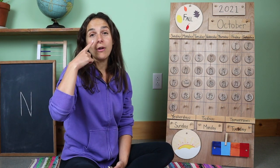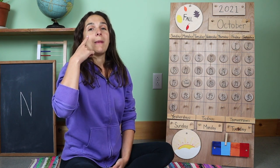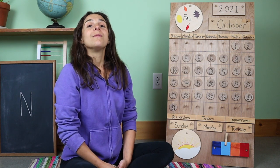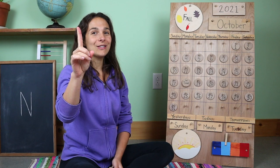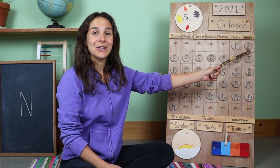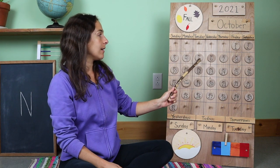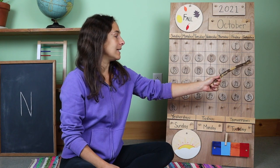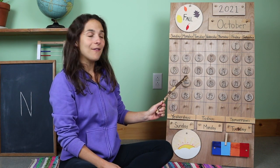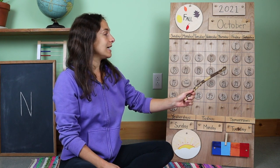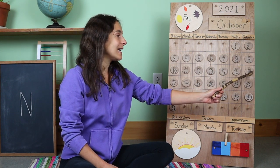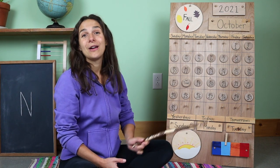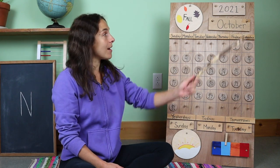Let's take a deep breath in through our noses and out from our mouths. Are you ready? Counting fingers are ready. 1, 2, 3, 4, 5, 6, 7, 8, 9, 10, 11, 12, 13, 14, 15, 16, 17, 18. We've had 18 days so far in the month of October.